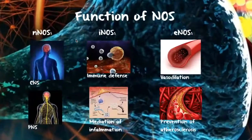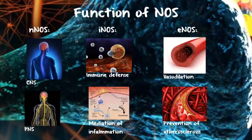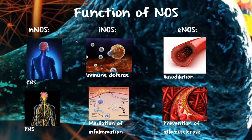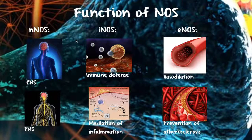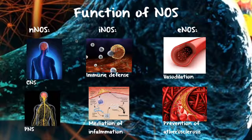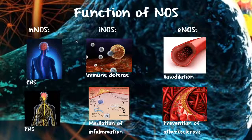There are three different types, or isozymes, of NOS: neuronal, endothelial, and inducible. All three use L-arginine and oxygen as substrates and have cofactors such as NADPH, FAD, FMN, and BH4. They also all bind calmodulin and contain heme.